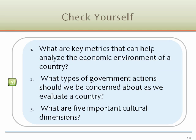Check yourself. One: what are key metrics that can help analyze the economic environment of a country? The general economic environment, the market size and population growth rate, and real income. Two: what types of government actions should we be concerned about as we evaluate a country? Tariffs, quotas, boycotts, exchange controls, and trade agreements. Three: what are five important cultural dimensions? Power distance, uncertainty avoidance, individualism, masculinity, and time orientation.